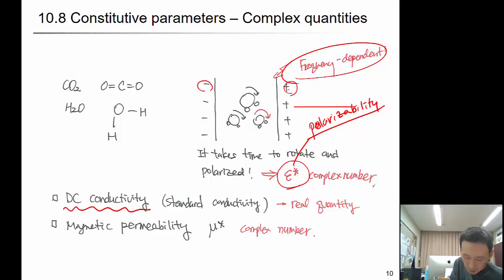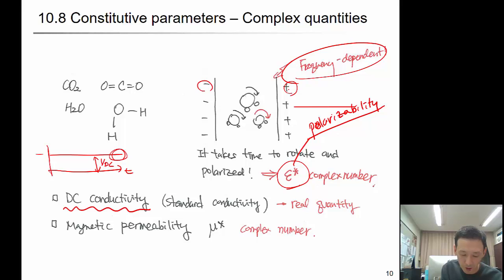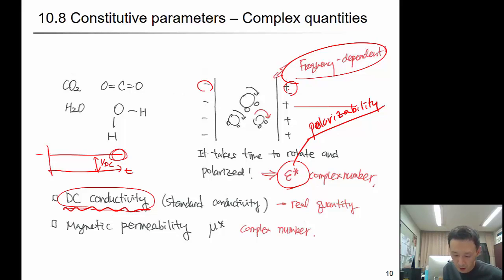What about DC conductivity? When applying a constant DC electric field, the charge will move in response to the potential magnitude of the electric field and create a current. The amount of that direct current will be proportional to the DC conductivity of the material. In that case, this property will not be phase-shifted; it will be synchronized with the external field, so it is called a real quantity. But if it is polarized, it becomes an imaginary quantity. Similarly, the magnetic field permeability will be the same.